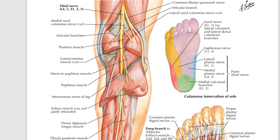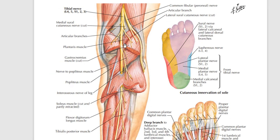The popliteal fossa is rhomboid or diamond shaped. The sciatic nerve divides at its apex into the tibial nerve and common peroneal nerve. You can see the tibial nerve giving small articular branches to the knee joint, and the common peroneal nerve also giving a small articular branch. This is the posterior view of the popliteal fossa and knee joint.